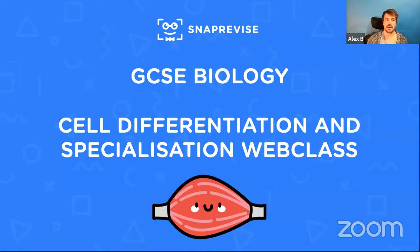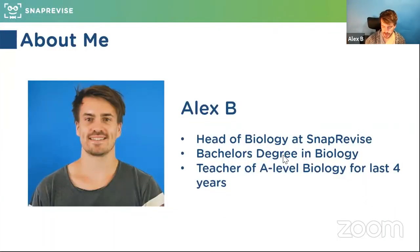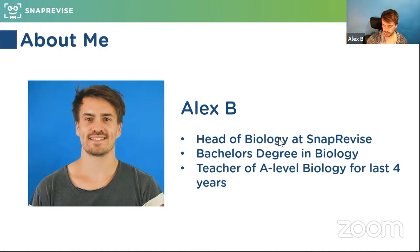Today we're looking at cell differentiation and specialization — two long words often thrown about together, really important for biology. So how cells become specialized and why they do it, that's the main gist, and then we'll look at some examples as well. My name's Alex, I'm the head of biology here at SnapRevise. I've been teaching biology for the last four or five years.